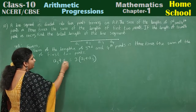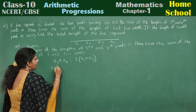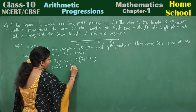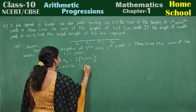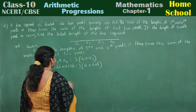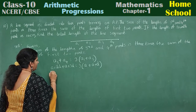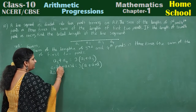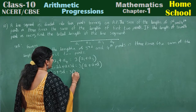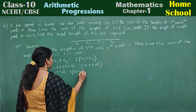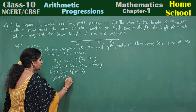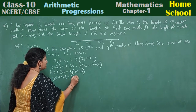Now substitute the general AP form. a3 is a plus 2d, a4 is a plus 3d, a1 is a, a2 is a plus d. So left side: a plus 2d plus a plus 3d gives 2a plus 5d. Right side: three into a plus a plus d gives three into 2a plus d.